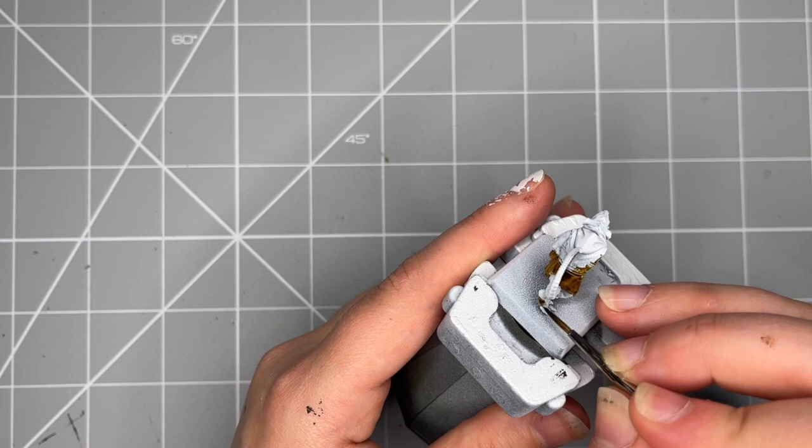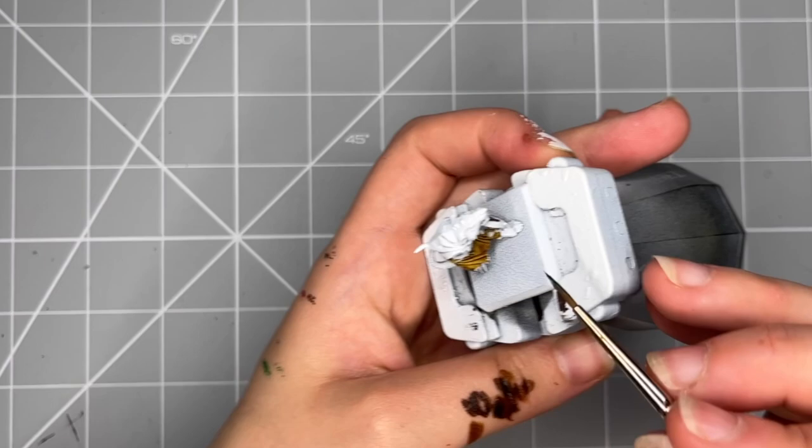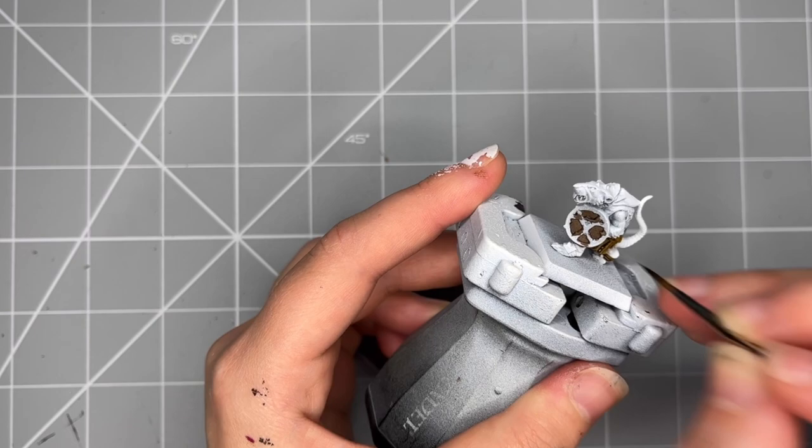So for the Rat Ogre, as there are almost like bandages wrapped around some of the areas, I will be doing these Snakebite Leather and focusing the green on the cloth around his waist.